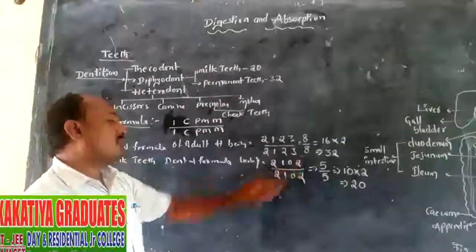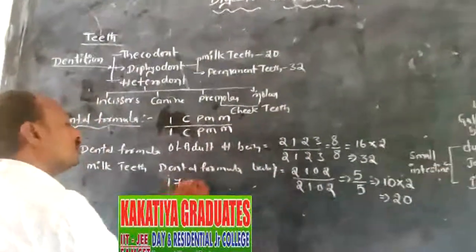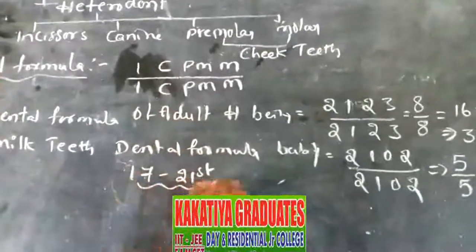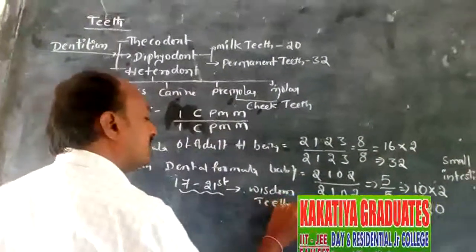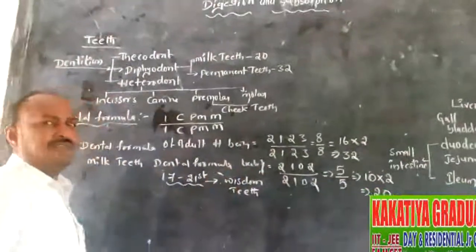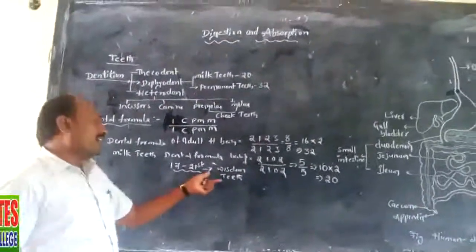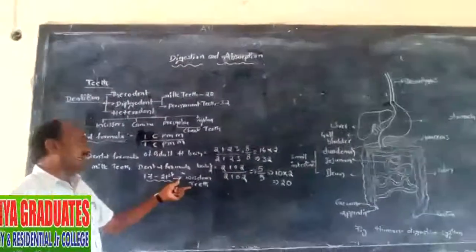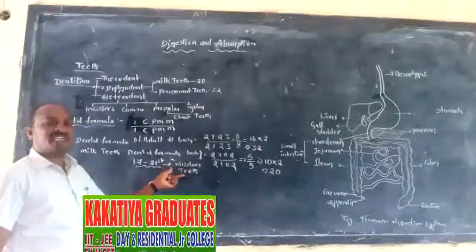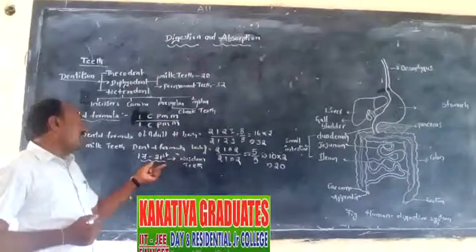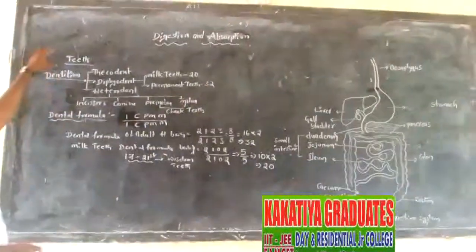The absent teeth in the baby are the premolars and the last molar teeth. These last molar teeth appear at the age of 17 to 21 years and are called wisdom teeth. They are commonly considered a vestigial part of the body, also called vestigial teeth. They appear late because there is no sufficient space in the jaw. This completes the discussion about teeth.